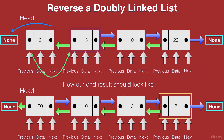Now let's take the next node, the node with data 13. In the end result, the next of 13 points to 2 and the previous of 13 points to 10. In our existing list, the next of 13 points to 10 and the previous of 13 points to 2. So let's swap these pointers as well.